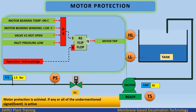Motor protection is activated if any one of the following signals is active: motor bearing temperature greater than 90 degrees, motor winding temperature greater than 130 degrees, valve V1 not open, or inlet pressure low. If any one signal is activated, it sets the RS flip-flop and the output motor trip is activated.